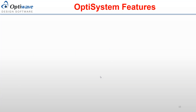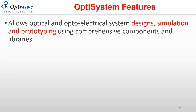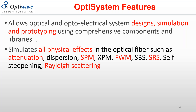OptiSystem allows users to design, simulate, and prototype different optical systems using comprehensive libraries and components in the software. One major advantage is that we simulate all physical characteristics of optical fiber, including linear and nonlinear effects such as attenuation and dispersion in the linear part, and nonlinear parts including self-phase modulation, cross-phase modulation, four-wave mixing, stimulated Brillouin scattering, stimulated Raman scattering, and self-steepening as well.